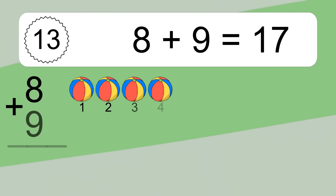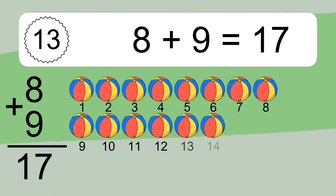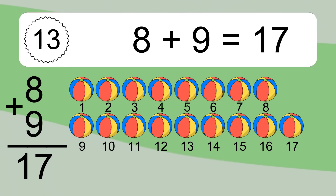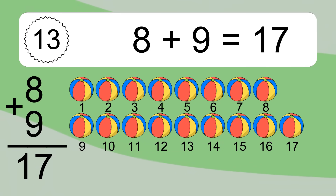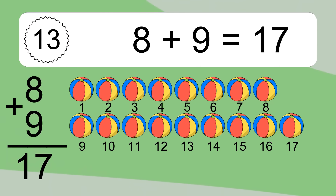8 plus 9 equals what? 8 plus 9 equals 17. Let's count it: 1, 2, 3, 4, 5, 6, 7, 8, 9, 10, 11, 12, 13, 14, 15, 16, 17.